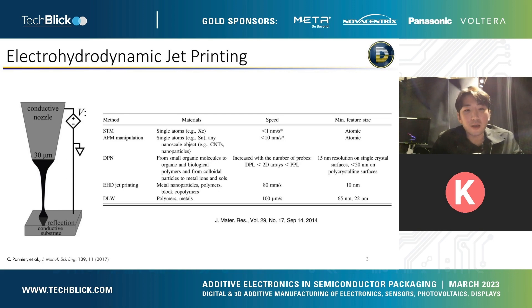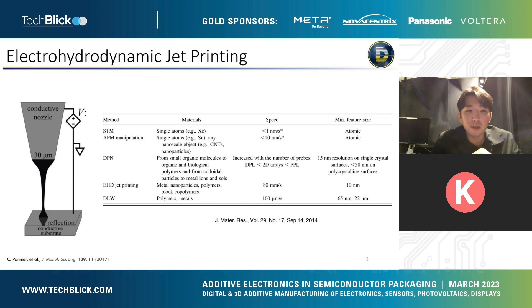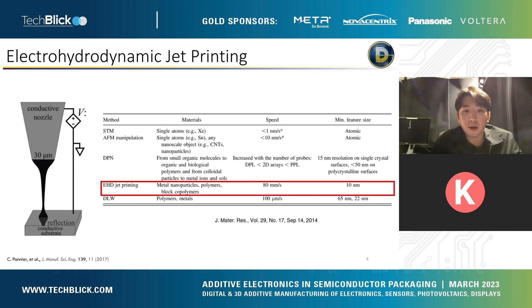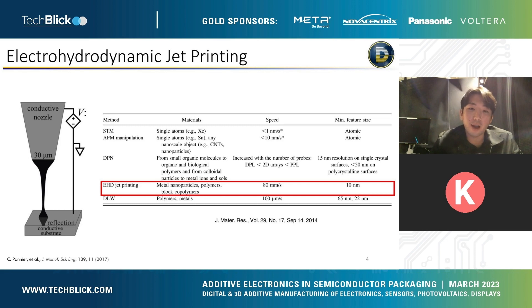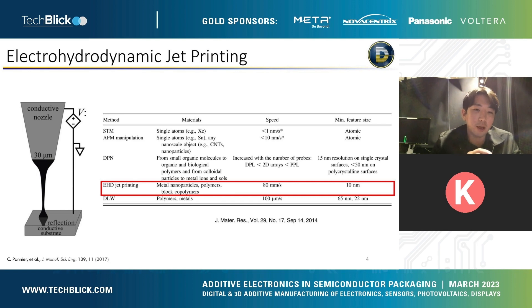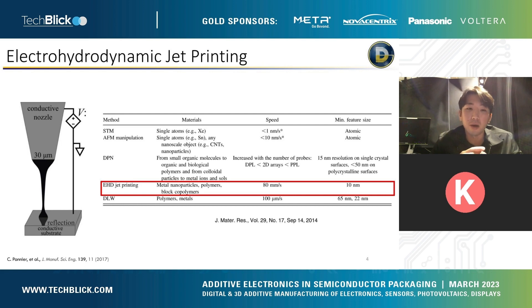E-jet is a hybrid version of inkjet printing — it uses the electrohydrodynamic phenomenon to pull ink out from the nozzle. The advantage of this is that, as you can see on this table compared to other SPM-based techniques, it has pretty good resolution, achieving up to 10 nanometer feature size while maintaining high speed. STM or AFM manipulation techniques have speeds in the range of a few nanometers per second, whereas electrohydrodynamic jet printing can achieve up to 80 millimeters per second, which is quite fast considering the resolution of the technique.